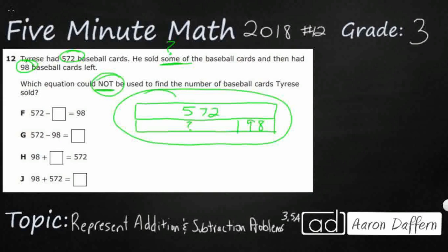When we're looking at a picture like this, I always look from top to bottom. So I'm thinking 572, and if you take away—because he sold some—I'm just going to put a box there, that's going to be my unknown. Take away however many unknown, and you're going to get 98. So that's what this represents.